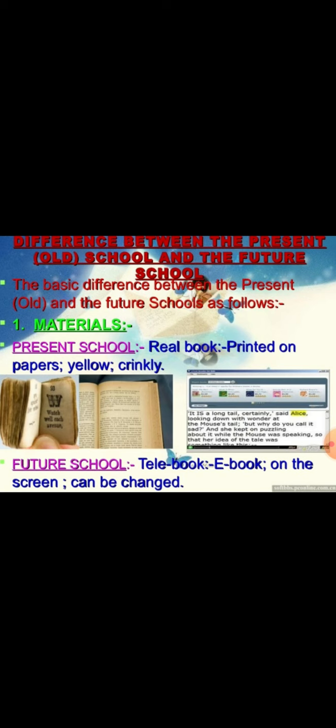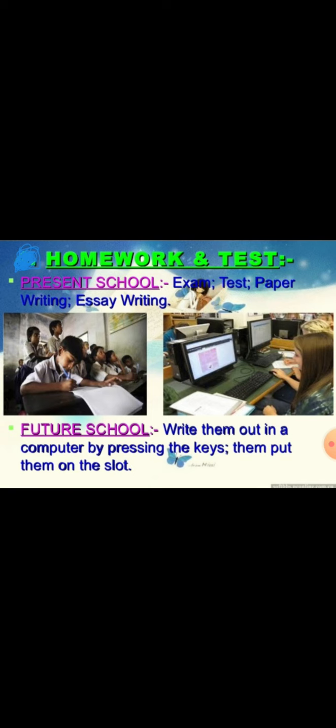There are two basic differences between present and future schools. Regarding materials: present schools have real books printed on paper, which are yellow and crinkly, whereas future schools have digital books and e-books on screens that can be changed. Regarding teachers: in present school, the teacher is a real person communicating with all students, and homework and tests are written exam papers and essays. In future schools, homework is done by pressing keys on a computer and submitting through a slot.